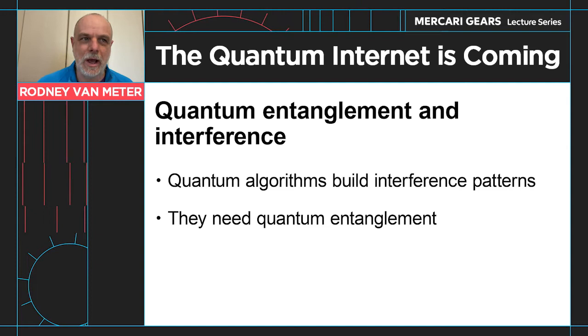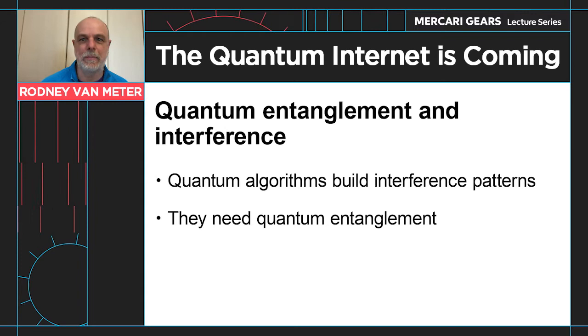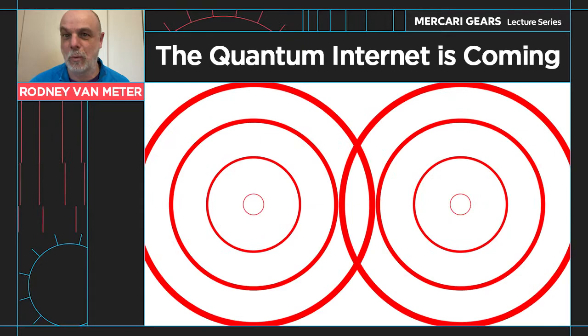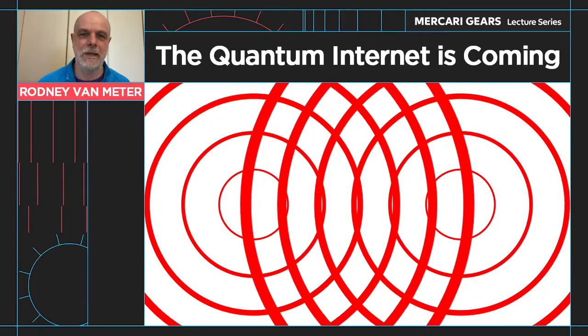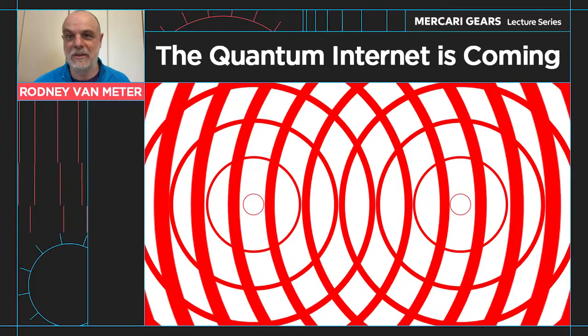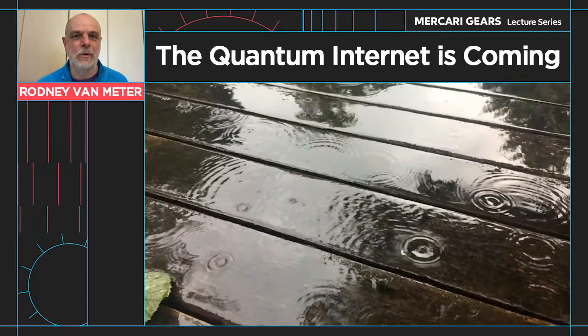Quantum algorithms really run by building what we call interference patterns. In order for those interference patterns to develop properly and be useful for solving a problem, we need quantum entanglement. You may be familiar with the word interference meaning noise, but in this case what we mean is something a little bit more mathematical: when you have two waves that come together someplace, those waves can either add up or cancel out, changing the size of the wave at that particular instance. That's what we call interference.